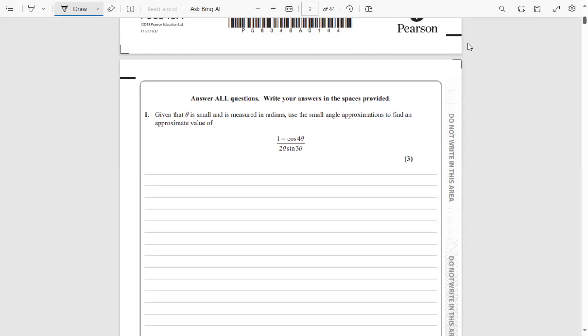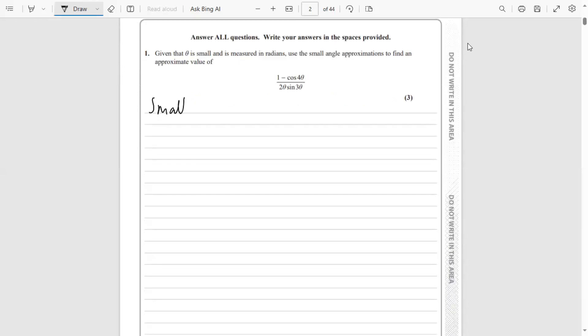Before we do this, it's a good idea to remind ourselves of our small angle approximations. When theta is small - and in A-level maths you don't really need to worry about exactly how small the angle needs to be, it's just loosely defined as a small angle - sine θ is approximately θ.